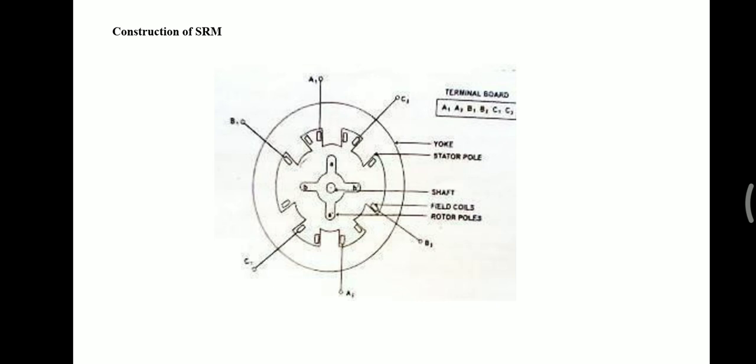The rotor is also made up of silicon steel stampings with outward projected poles. The number of poles of the rotor is different from the number of poles of the stator. The stator may have more number of poles while the rotor may have lesser number of poles. In most available motors, the number of poles of the rotor is 4 or 6 depending upon the requirement.